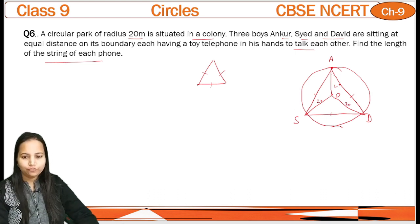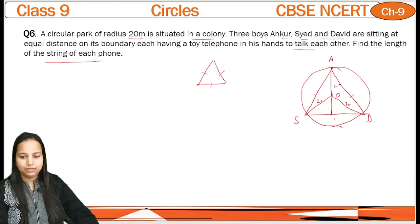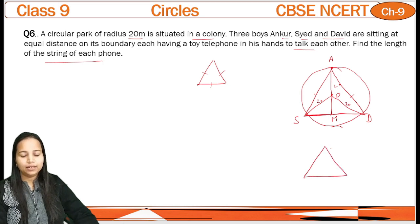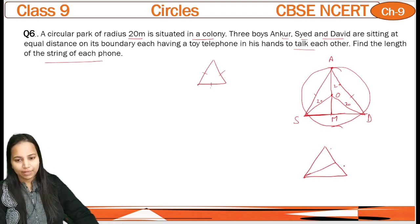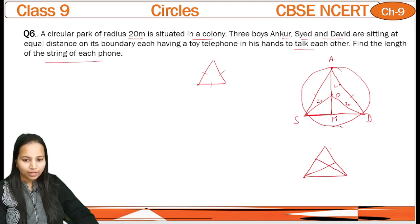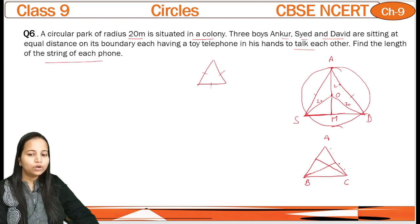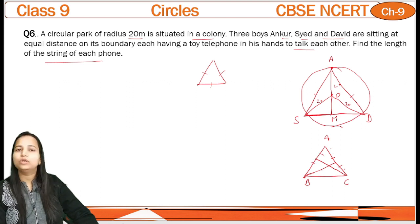Ab hum is AO ko further extend karenge aur SD pe meet karenge. Ab dekhiye, yeh humne bana diya — let's say this is point M. Ab yeh jo SM aur MD hain, yeh ab equal honge. Kaise? Equilateral triangle ki property hai ki agar hum kisi vertex se ek altitude doosri saamne wali opposite side pe draw karein, to wo altitude usko do equal parts mein divide karega. Isliye SM equal to MD hai.